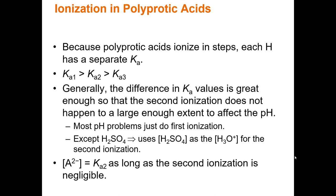Now let's cover polyprotic acids. Because polyprotic acids ionize in steps, each acidic proton has a separate Ka. For monoprotic acids there is one Ka value. If a compound has two acidic protons like H₂SO₄, it has two Ka values — one for the first H and one for the second. There is always a difference in acidity between the protons; they're never equal. Depending on how many acidic protons there are, we'll have that many Ka values.